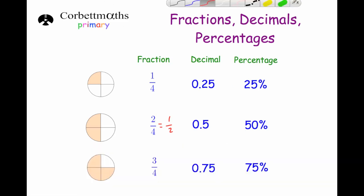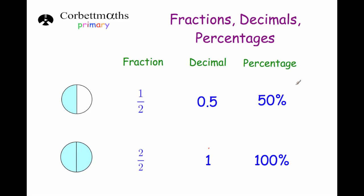Another very important one is 3 quarters. This diagram represents 3 quarters because three of the four sections are shaded in. 3 quarters is 0.75, and as a percentage 75% — because if half is 50% and the other quarter is 25%, altogether that would be 75%. The one quarter and three quarters are very important facts to learn, as is the half.